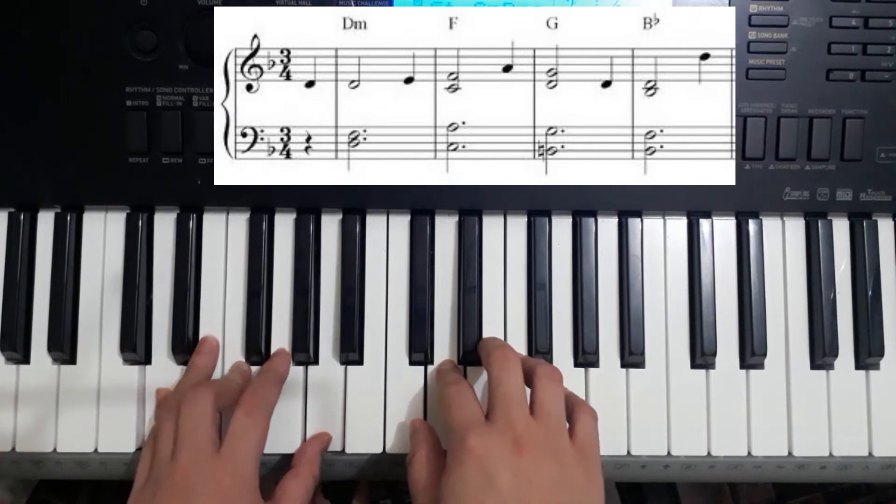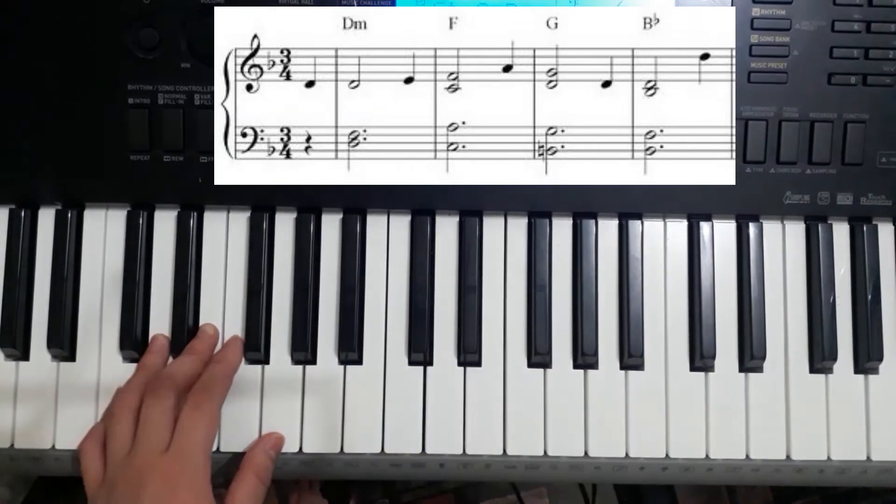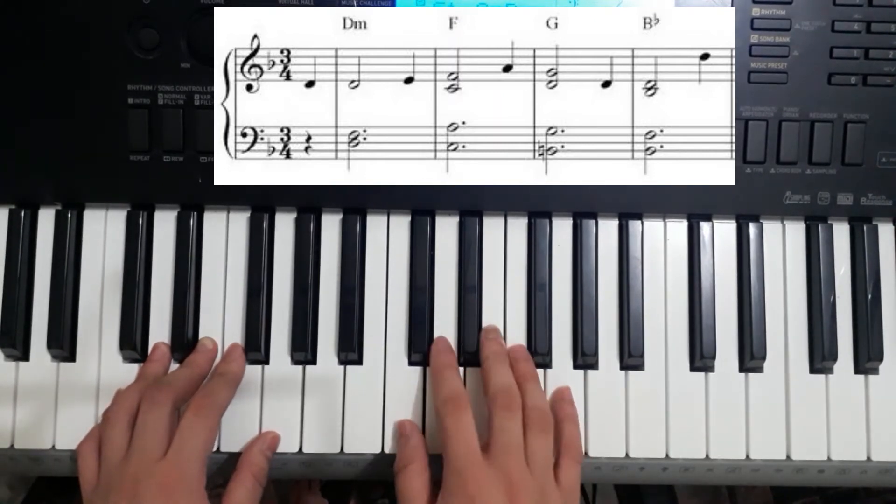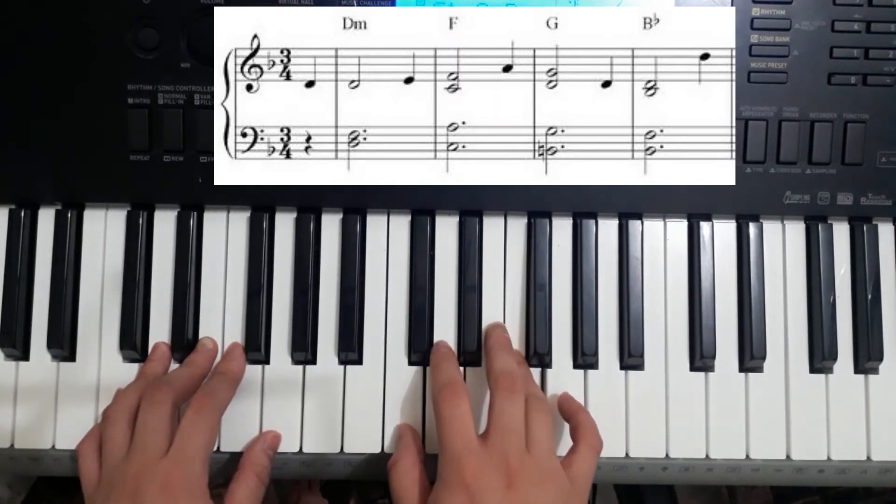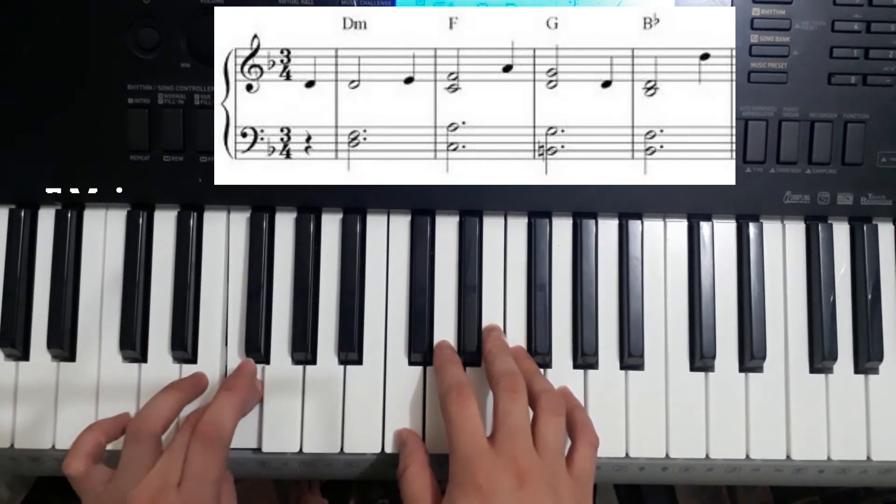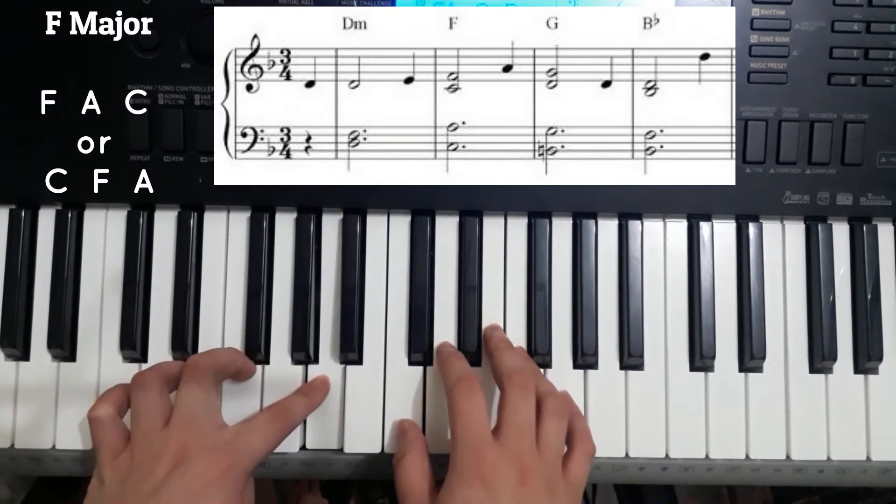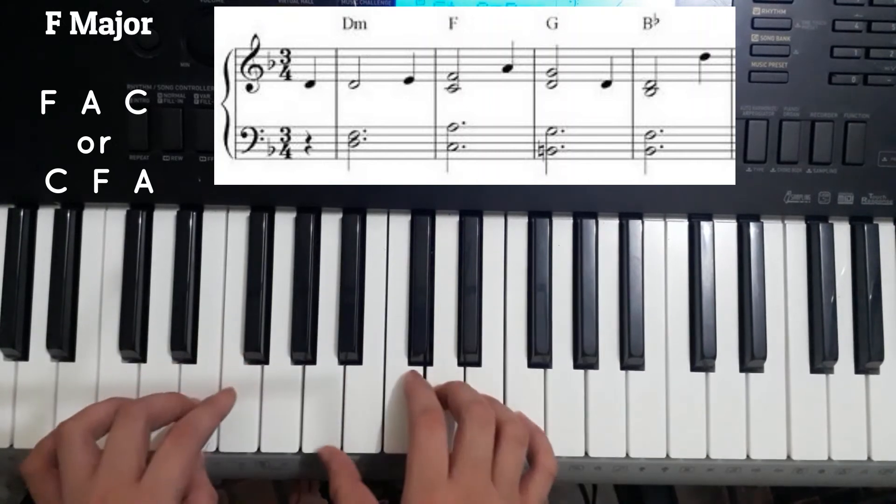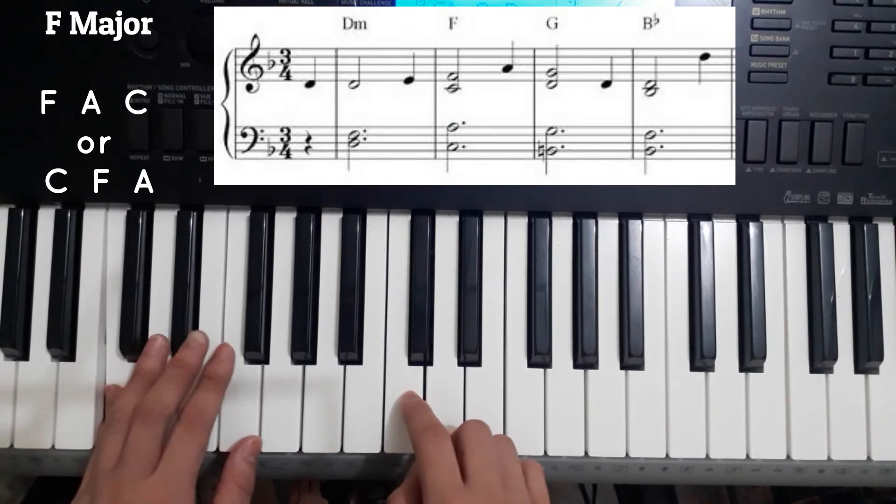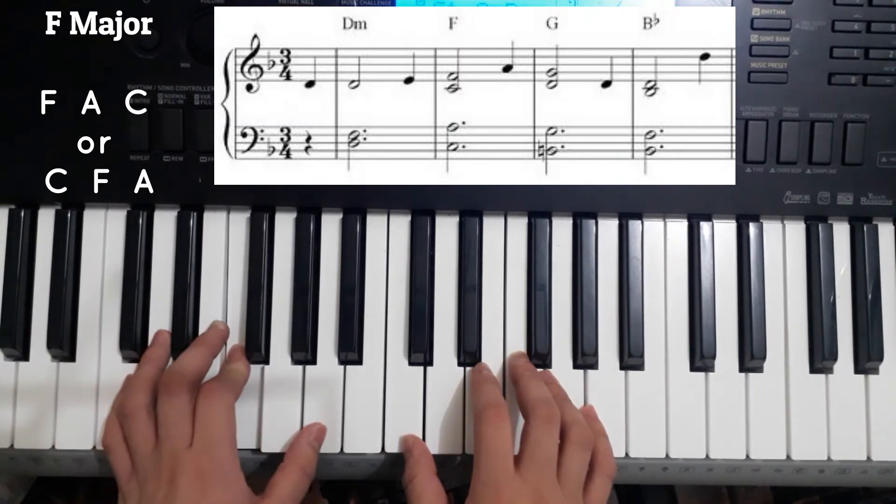So on bar 3, we are going to play on the right hand C and F. The chord progression for bar 3 on the left hand is F, which is the F, A, and C. But it's too far away from the C, so we're going to use the lower C, C, F, A. We're going to play on the second note A.